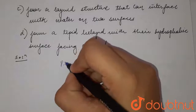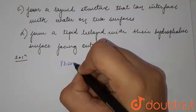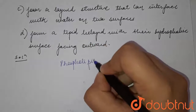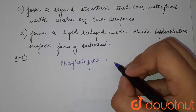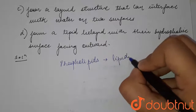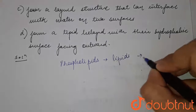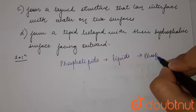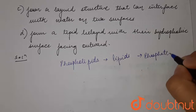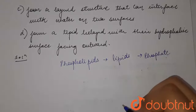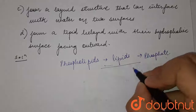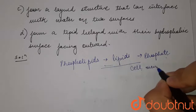So students, these phospholipids — which are the essential components of the cell membrane — are actually lipids which have phosphate in their molecular structure. And they are an important constituent of the cell membrane.